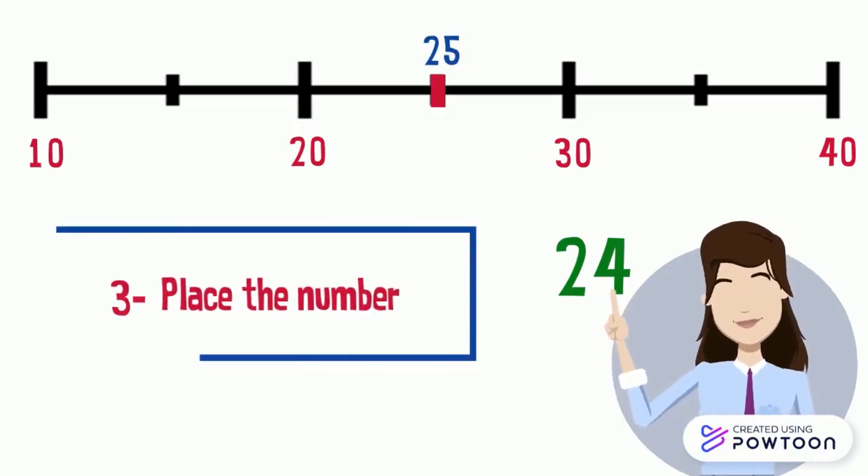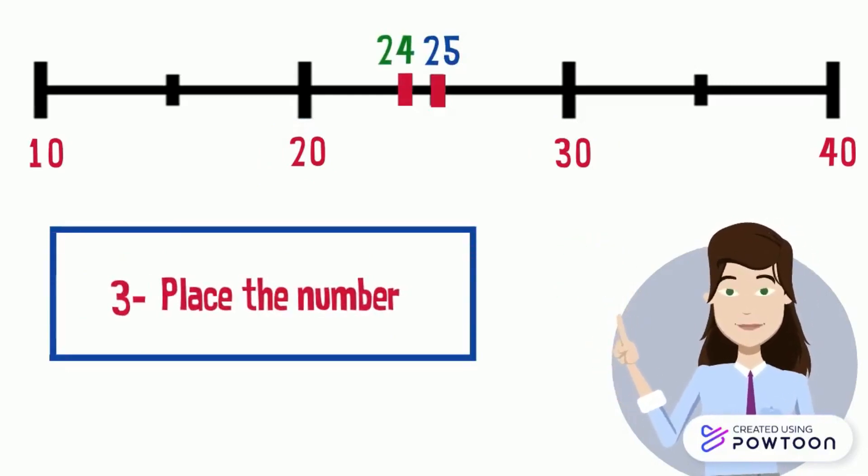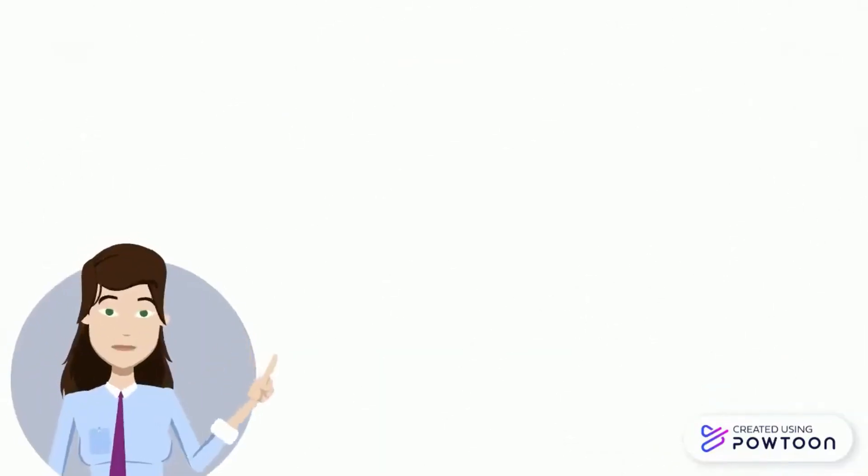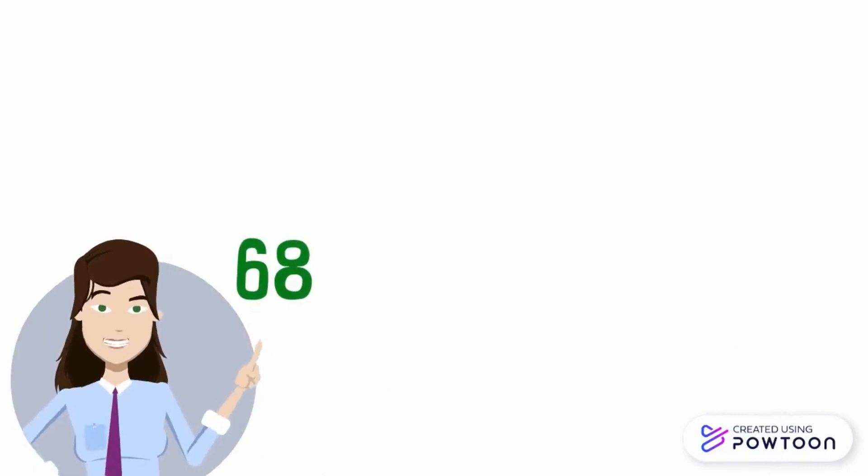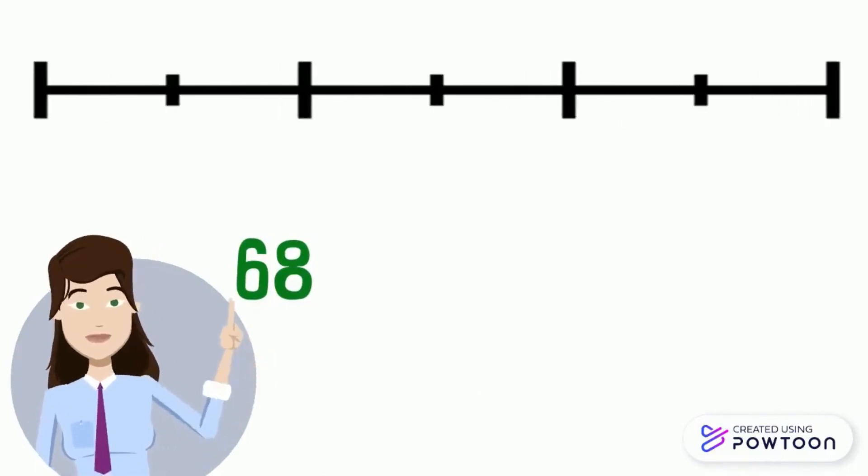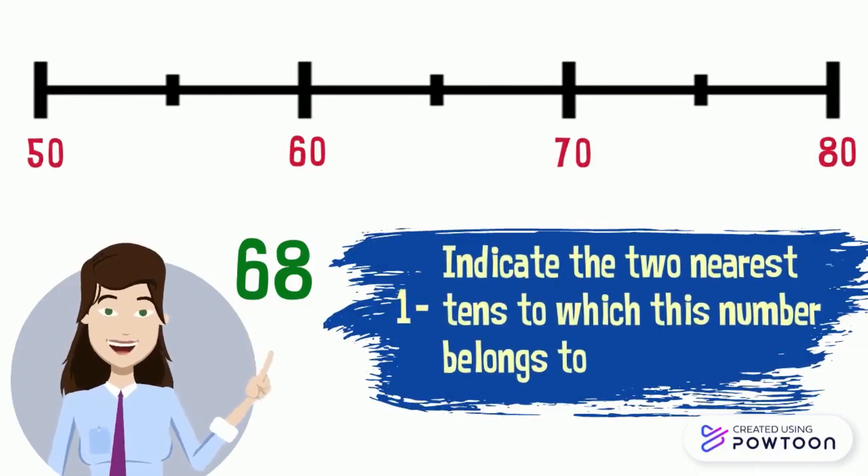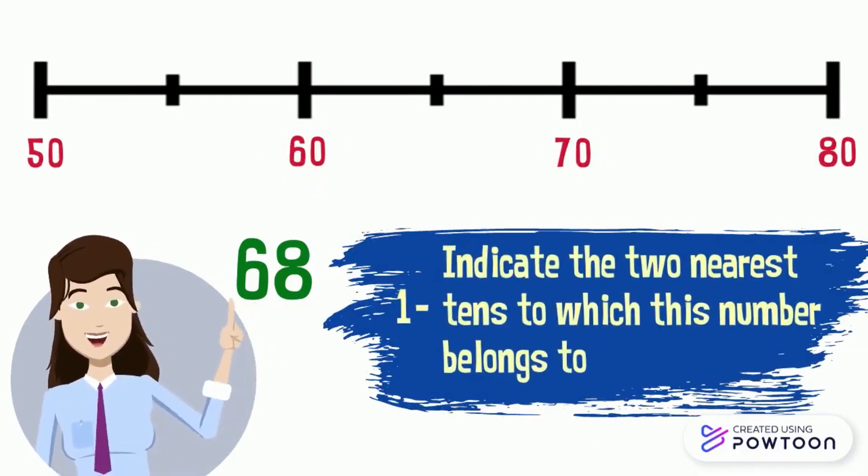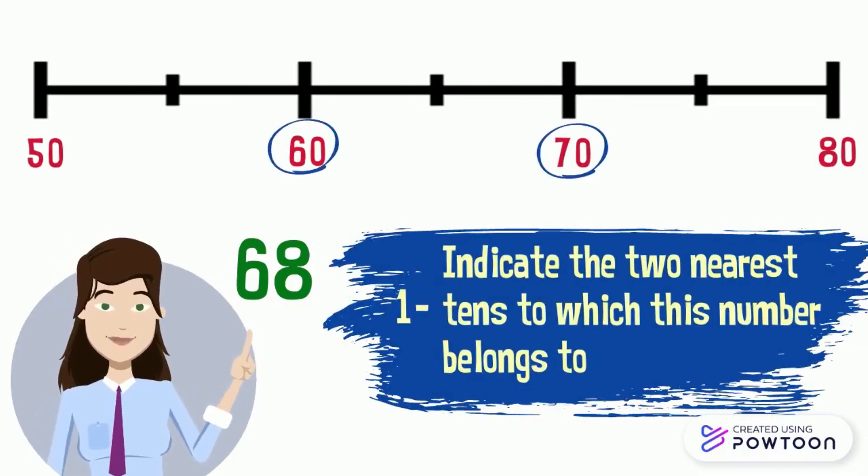And since 24 is less than 25, the nearest 10 to 24 is 20. Now let's take another example. We want to find the nearest 10 to 68. To find out the nearest 10 to this number, first we should know between which two tens does 68 belong to. It belongs to 60 and 70.